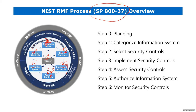NIST 800-37 does not tell you how to categorize, how to select controls, or how to implement them. It only sets the tone as ground information for how everything should be done end to end. For each individual step there is separate documentation — for example, categorization references FIPS 199 and Special Publication 800-60 rev 1 and rev 2.